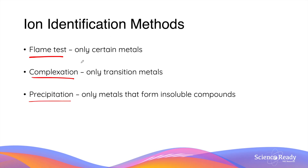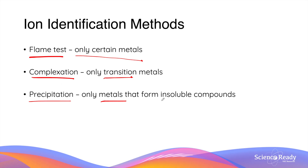Throughout the video we'll be talking about each of the tests and what they are suitable for, but for now it's very important to know that the flame test is only applicable for a certain selection of metals, the complexation test is only applied for transition metals, and precipitation tests can only be used for metals that form insoluble compounds in water.